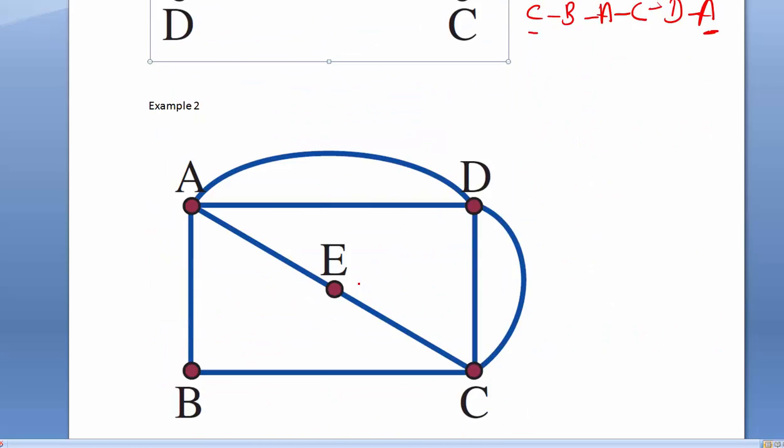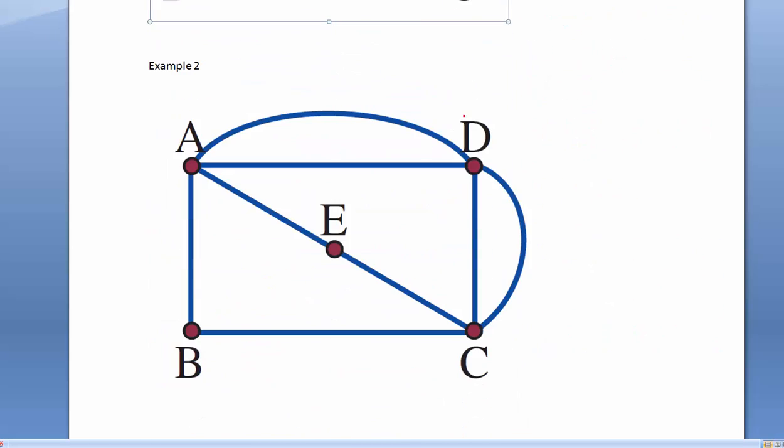Let's check out another example. So, this is our second example here, and again, we start the same way. To work out whether a path or a circuit, or neither is possible, let's write the degree of each of the vertices. So, A has a degree of 4, B has a degree of 2, C has a degree of 4, D has a degree of 4, and E has a degree of 2.